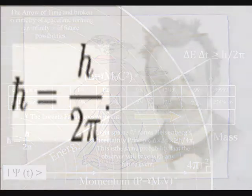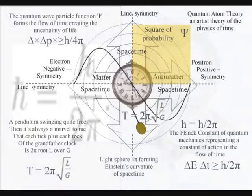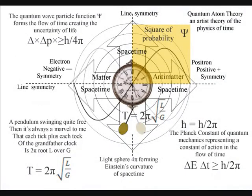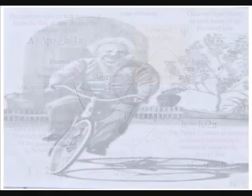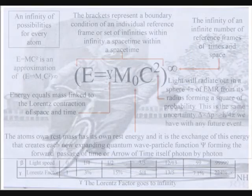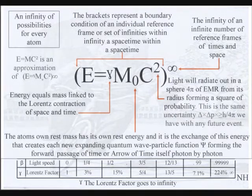Because the Planck constant is a constant of action, this gives us an objective understanding to quantum mechanics, and an objective understanding to the physics of time itself. It will help in the promotion of this theory.